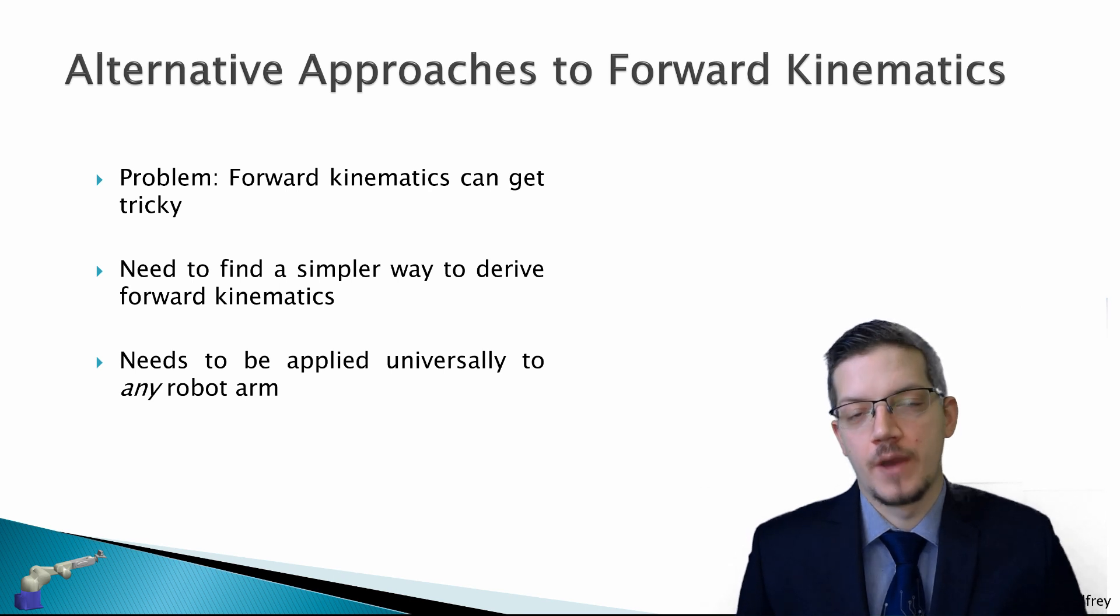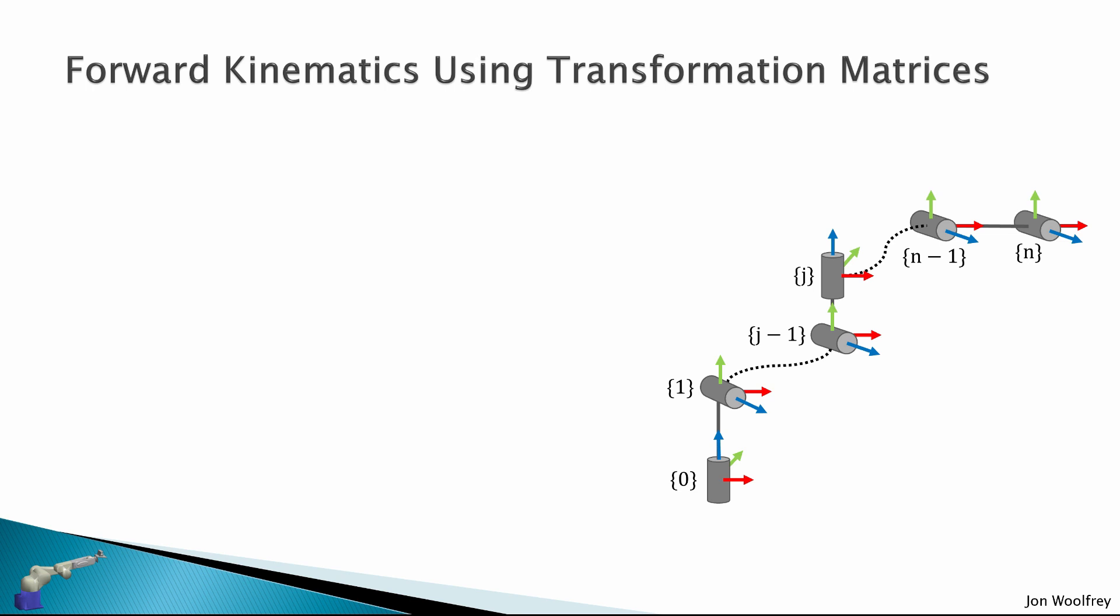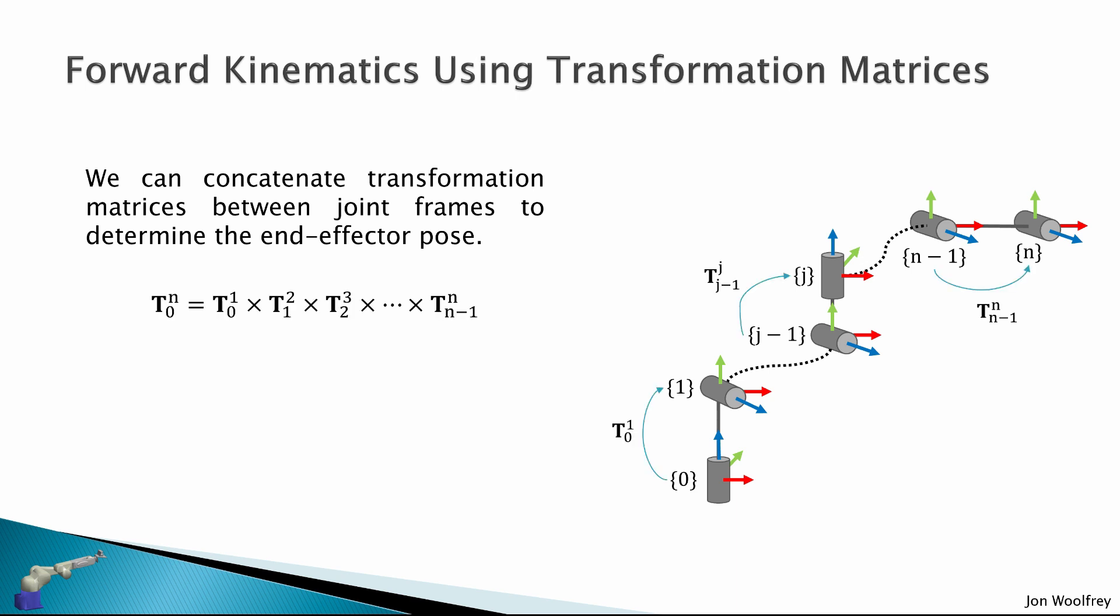So the power of transformation matrices is that we can derive forward kinematics using them. So we can concatenate transformation matrices between joint frames to determine the end effector pose. So we just multiply transforms between joint frames all the way up the kinematic structure to get the transform from frame 0 or the base frame to the end effector frame.